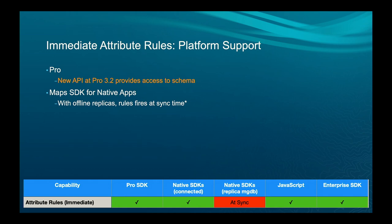One implication of rules firing at sync time: be very careful about constraint rules, because if a constraint rule fails, you won't know until the mobile user does a sync. In that case, we really recommend using validation rules — batch rules you run back in the enterprise to make sure your data is correct.